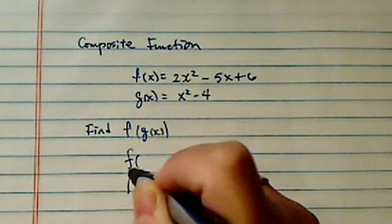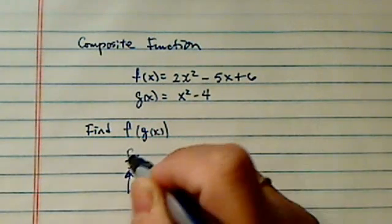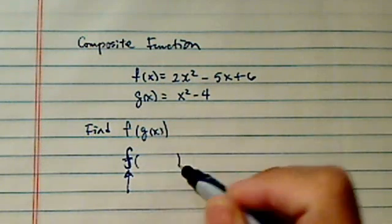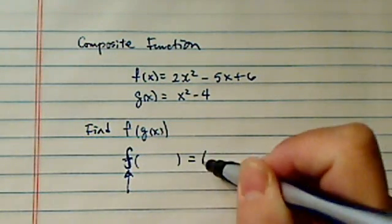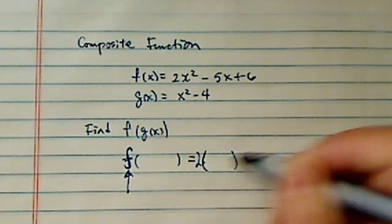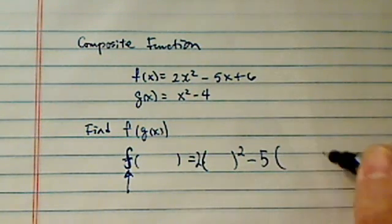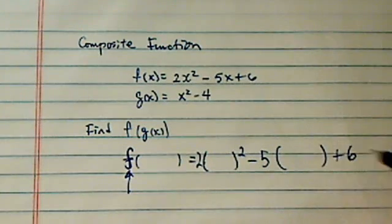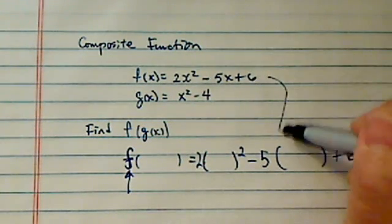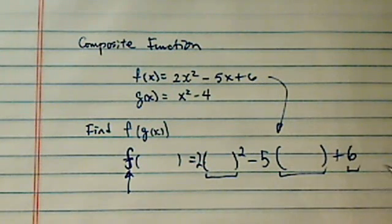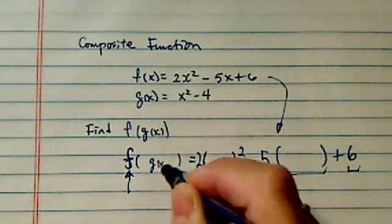The way we do composite functions is to look at the outer shell first. f(x) says whatever you give me, I'm going to do 2 times that squared minus 5 times that plus 6. So I copied the function form from what I was given, and then I'm going to put g(x) in there.